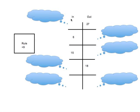Here's an example of a function machine where you have an in and an out. We have a rule stated right here that when I go from in to out, I'm going to be adding 9. So whenever I'm going forward from in to out, I'm going to be adding 9.